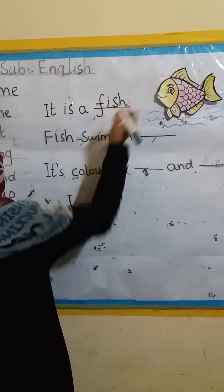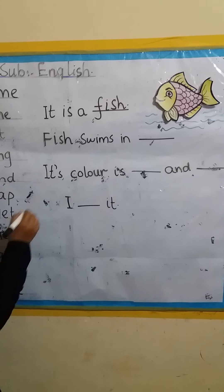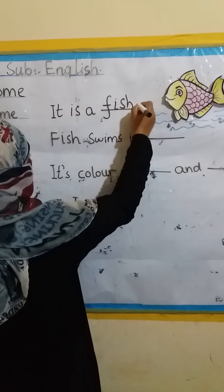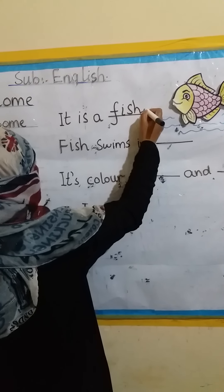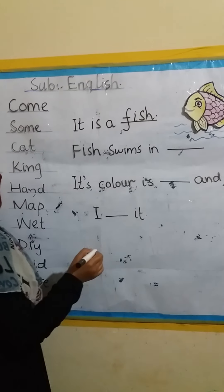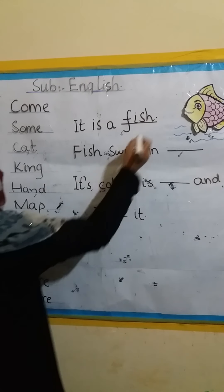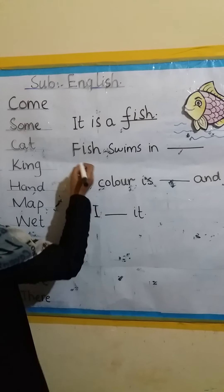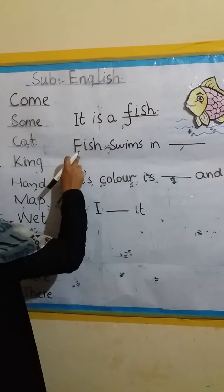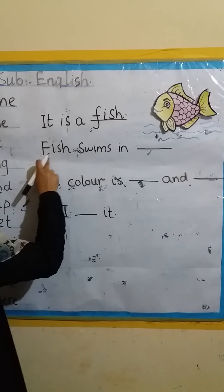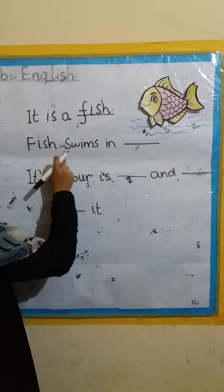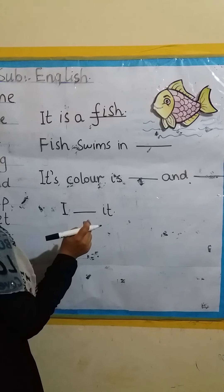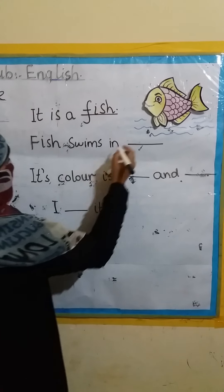How do we write fish? F, I, S, H — fish. When we complete the sentence we will make a full stop. Okay, full stop. This is a full stop. And the next sentence: fish swims in — where does the fish swim? In water.